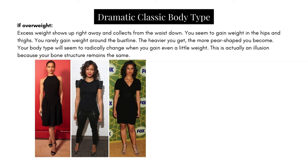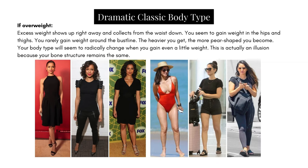You can definitely see how the shape of the body can change quite drastically. In that first look she looks very straight — almost classifiable as a rectangle. In the third look, you would classify her as an hourglass or pear shape. That's a very dramatic shift caused just by additional weight. Another Dramatic Classic is Olivia Munn, and we can see her also at three different weights.